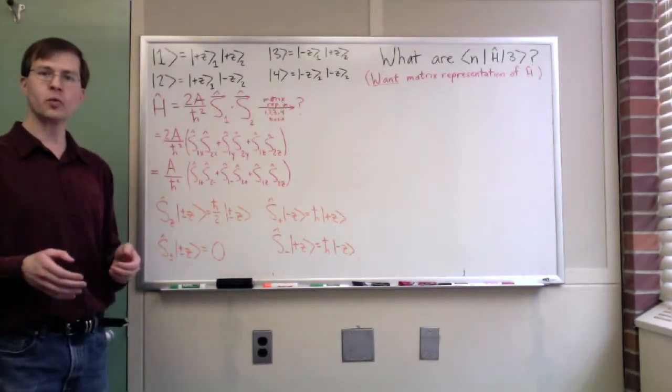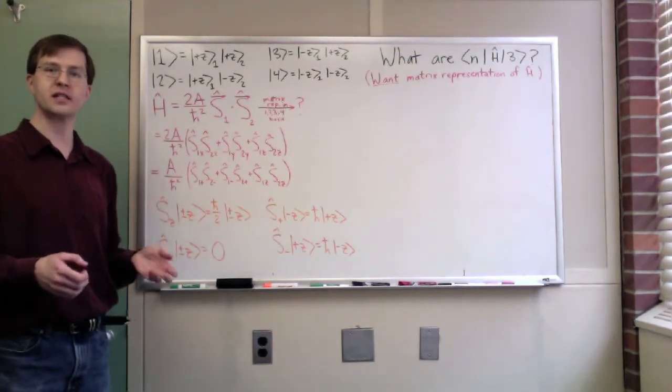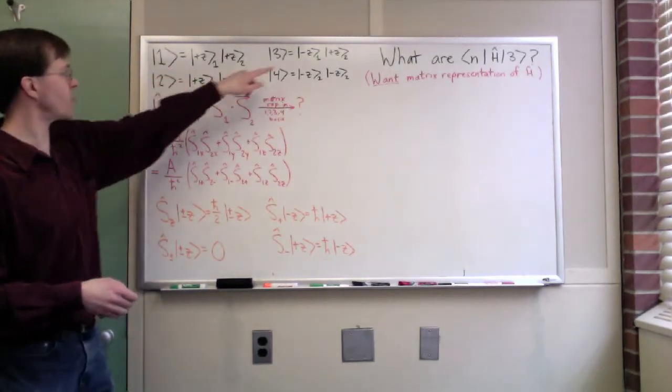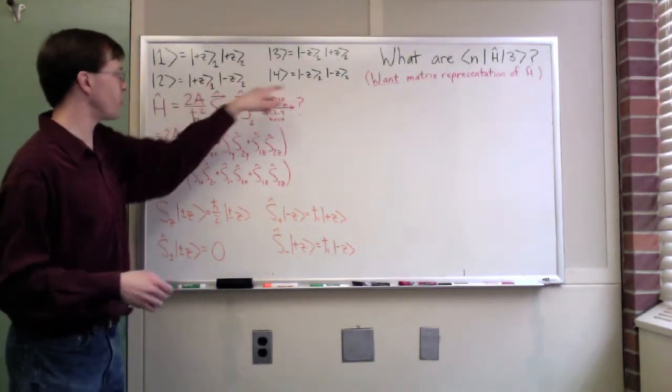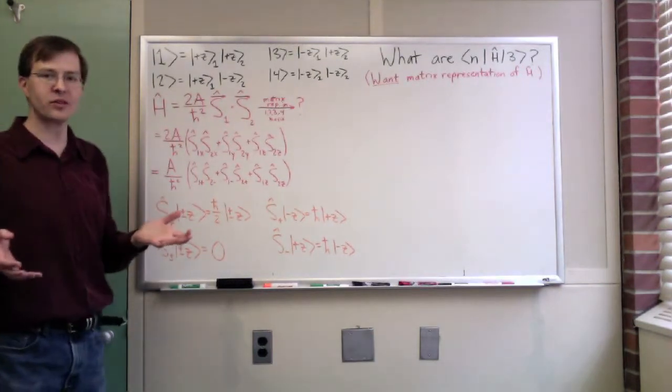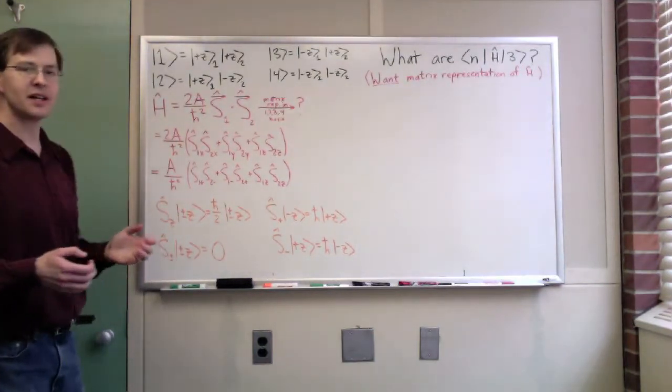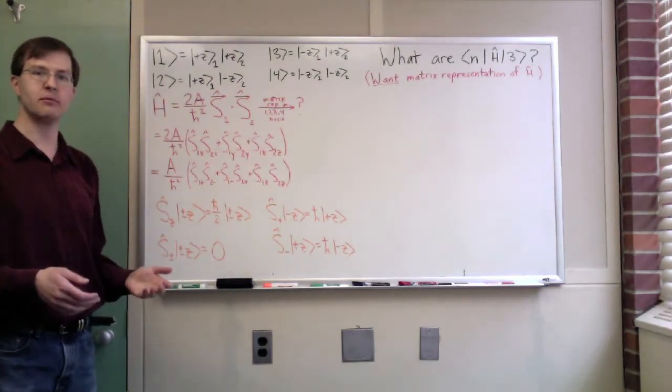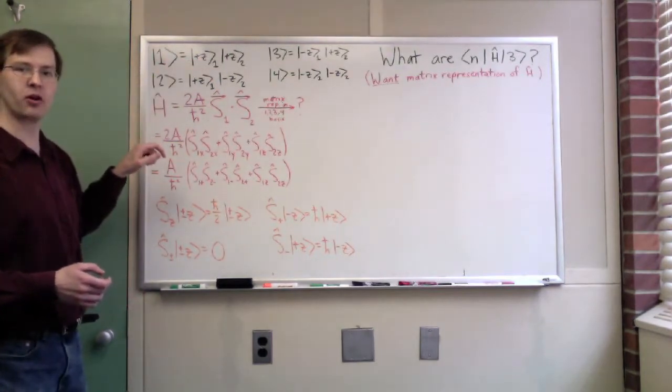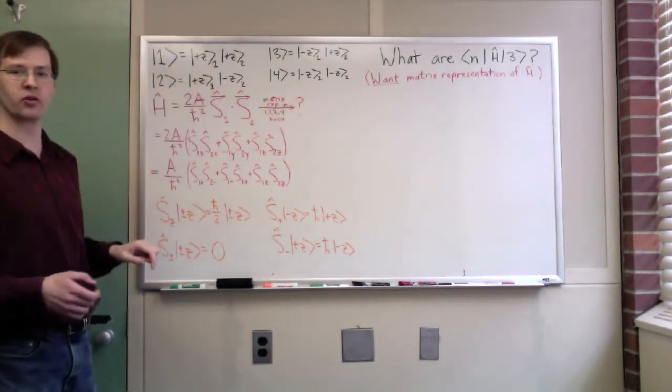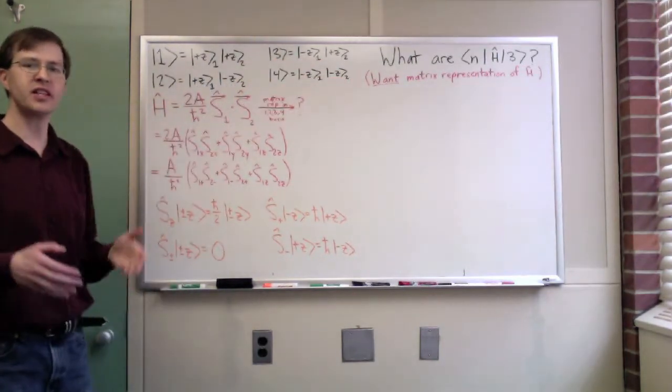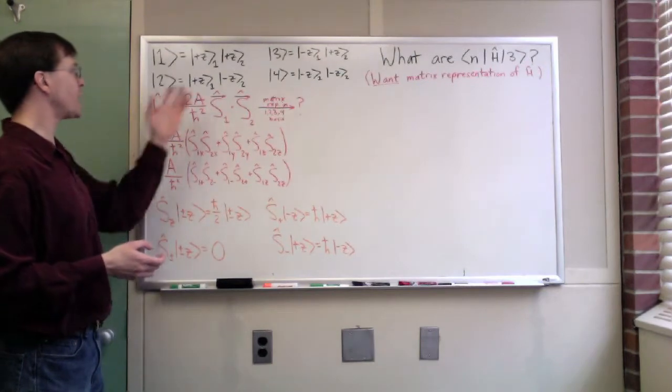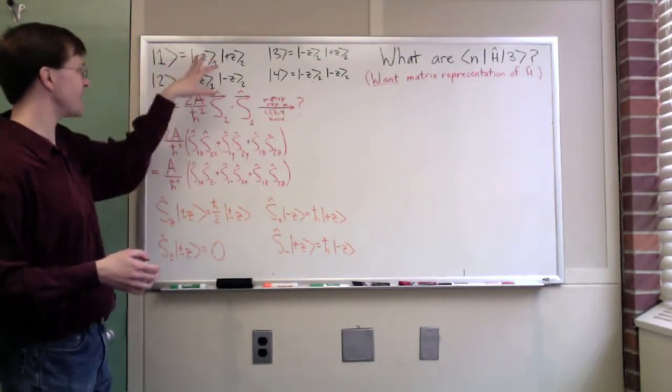We know each one of the two particles can be in two possible spin states in our usual basis of the z-component of spin. We've called those plus z and minus z. Particle one can be either in the plus z state or the minus z state, and particle two can be either in the plus z or the minus z state. We've got those two pieces that are independent, so we just label states based on what are all the possible states of the system.